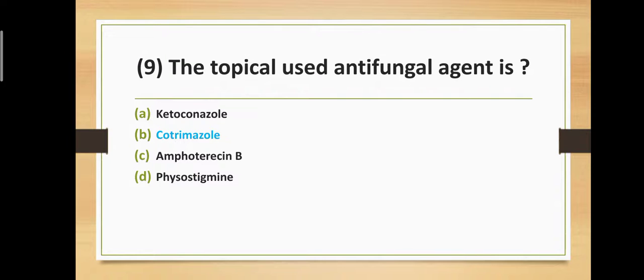Question number nine: Which drug is used as a topical antifungal agent? Option A: ketoconazole, Option B: clotrimazole, Option C: amphotericin B, Option D: fluconazole. The correct answer is Option B — clotrimazole is the topical use antifungal agent.